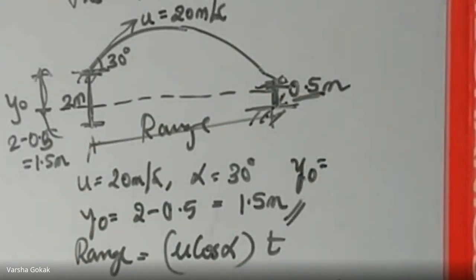Next class, we will take more numericals on projectiles or start with curvilinear motion. For now, we will end the class. All of you put your roll numbers in the chat box and you can leave the meeting.